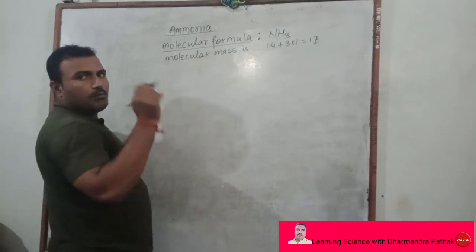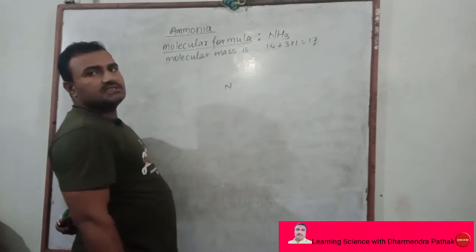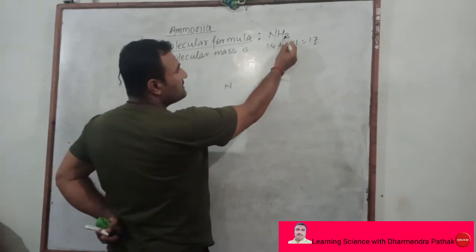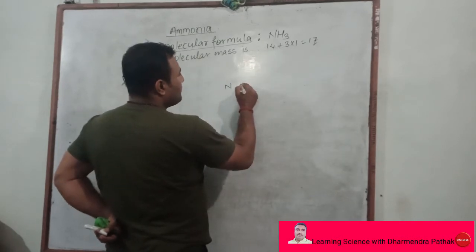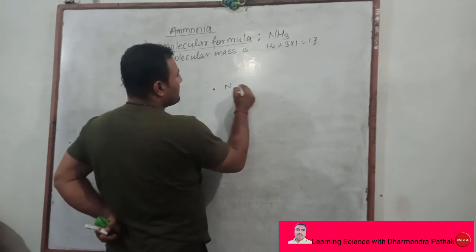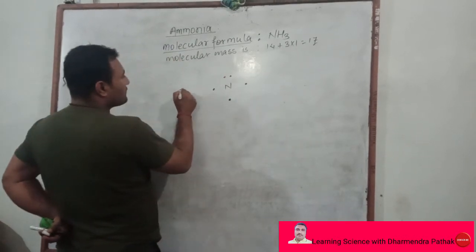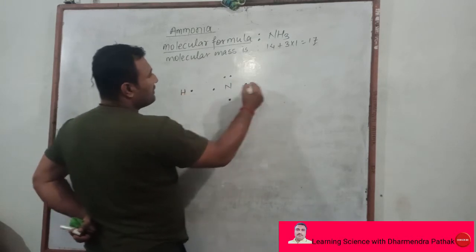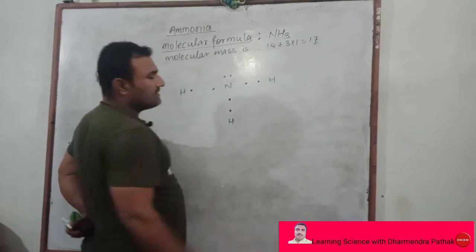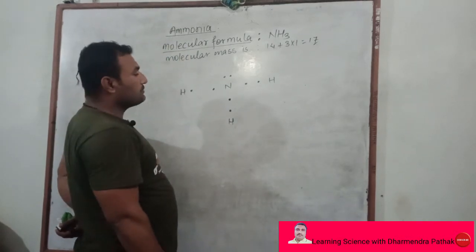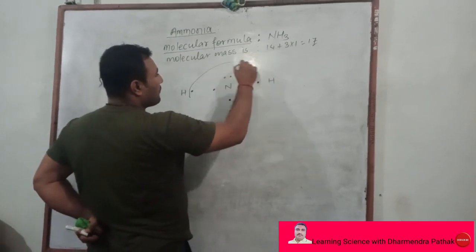In ammonia gas, the nitrogen atom is bonded with 3 hydrogen atoms. Nitrogen contains 5 valence electrons, and 3 electrons are shared with 3 hydrogen electrons — nitrogen shares 1 electron with each hydrogen atom to form a covalent bond.